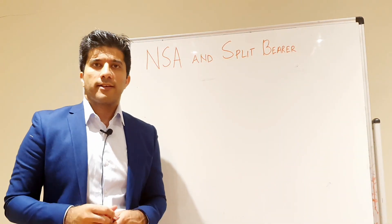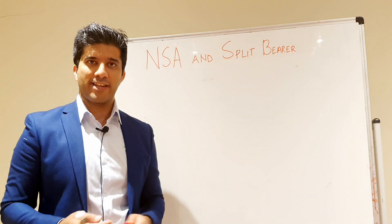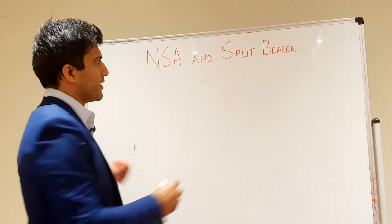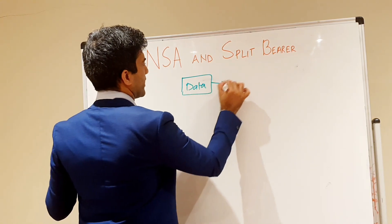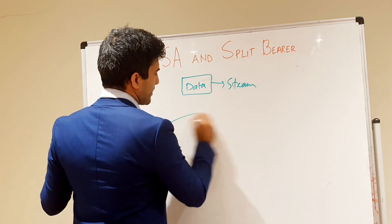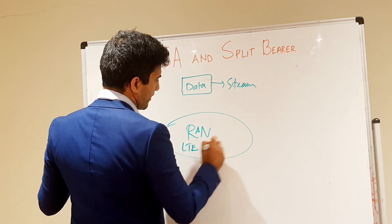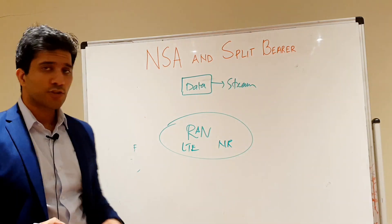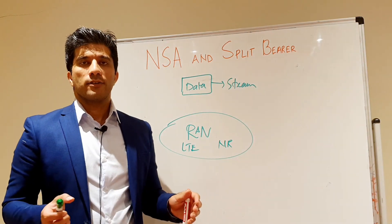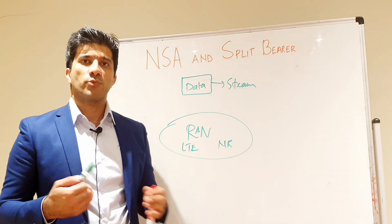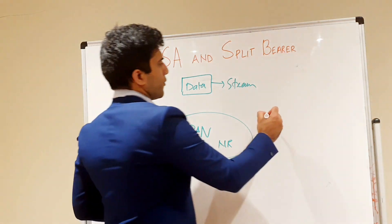In networks everything works in zeros and ones. For example, if you are streaming, browsing, gaming, or doing any activity, you have a data stream. This is your RAN, which has an LTE part and an NR part. How the network uses both LTE and NR to serve that data is where the concept of split bearer comes in.